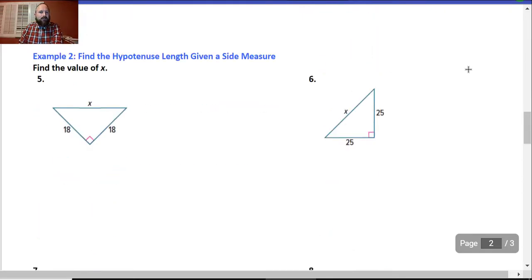Find the hypotenuse length given the side measure. Alright, well, first off, I know that this is an isosceles triangle. So I know that this is 45 and 45 then. Well, now I know that this is going to be 18 radical 2. Simple.